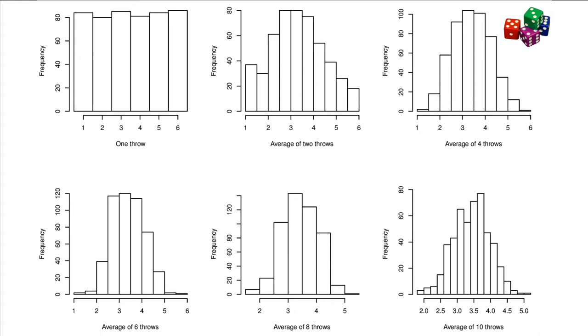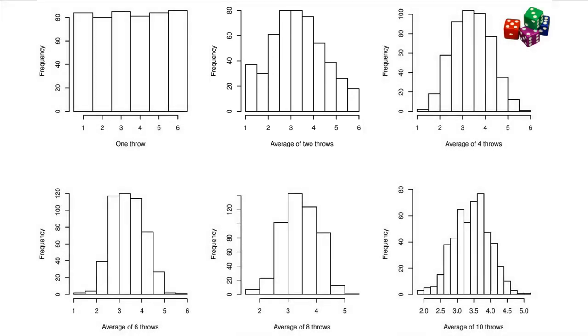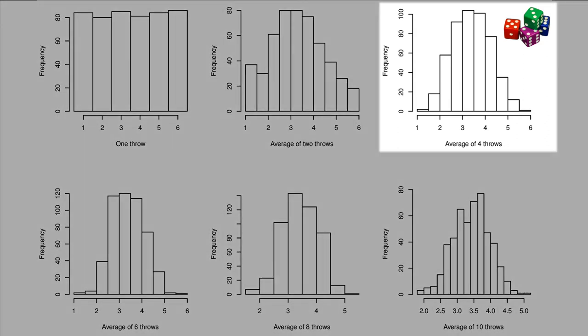Now let's throw the dice twice and calculate the average of both numbers. Plotting the histogram of those averages, I get this distribution in the top middle row. Throwing four times and then averaging those four numbers leads to this distribution, shown on the top right.